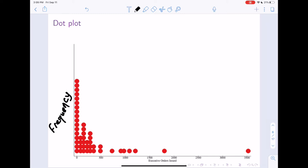And then after 500, we have one, two, three, four, five, six, seven presidents. And we have one president that's really far away with over 3,500 executive orders that they've issued.